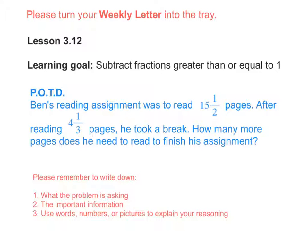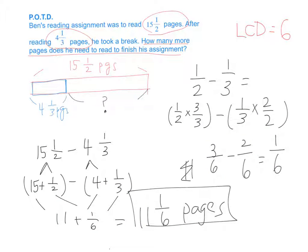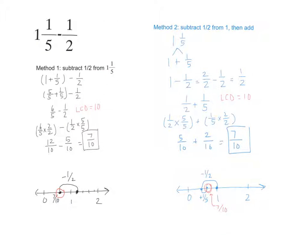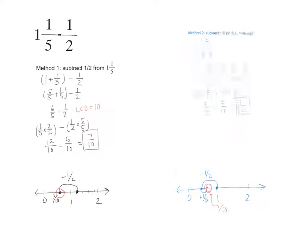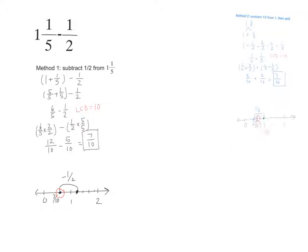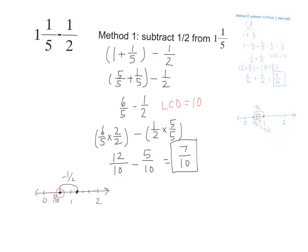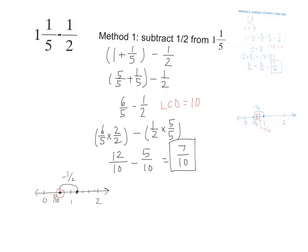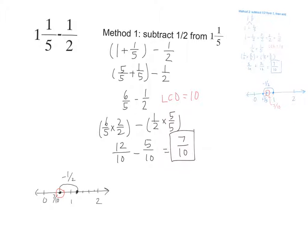But let's first talk about the problem of the day. Let's take a look at this problem right here. We have 1 and 1 fifth minus 1 half. There are two different methods we're going to learn and talk about today. So let's not talk about method 2 yet. Method 1 involves subtracting 1 half from 1 and 1 fifth.